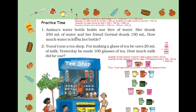Now you have to find how much water was drunk by both. What you will do here is add 250 ml and 150 ml. After adding 250 ml and 150 ml, you will get 400 ml as the answer. Now, how much water is left in her bottle? Quantity of water left in the bottle will be 1000 ml minus 400 ml, and the answer will be 600 ml. 600 ml of water is left in her bottle.